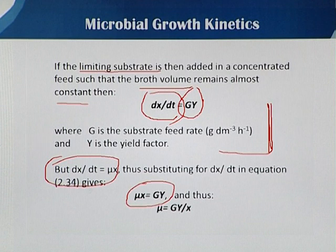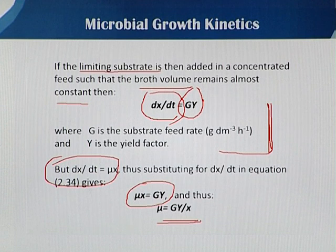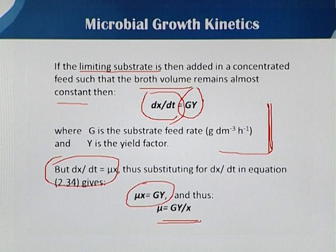If we want to calculate the specific growth rate during fed-batch in a fixed volume, this equation provides the solution. We can calculate the specific growth rate μ if we know the feeding rate g, the yield factor y, and the biomass concentration x — that is, μ = g·y / x in a fixed volume fed-batch.